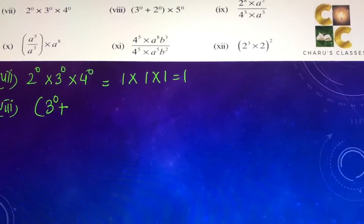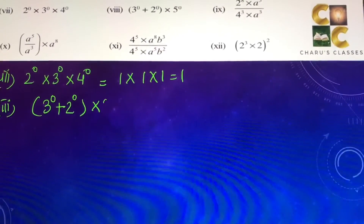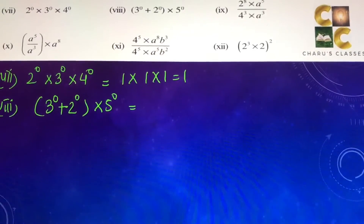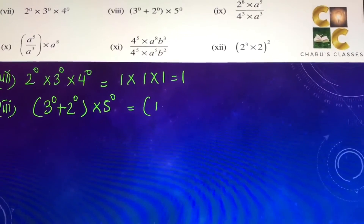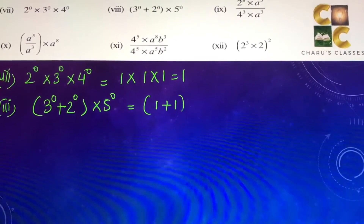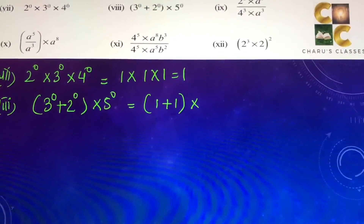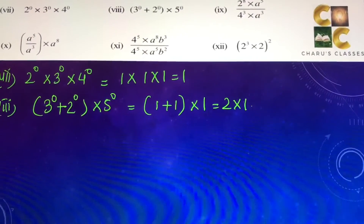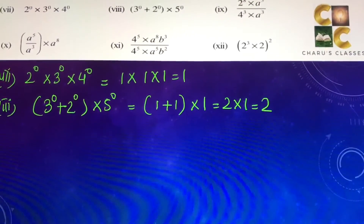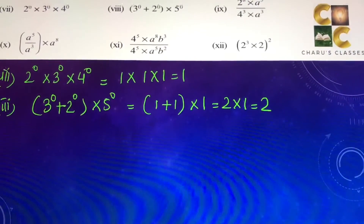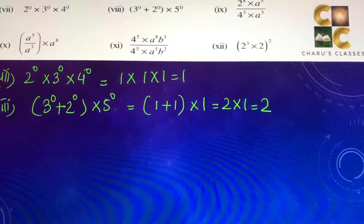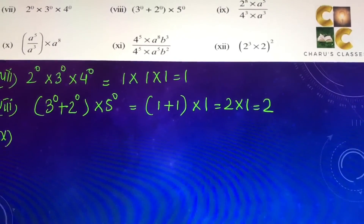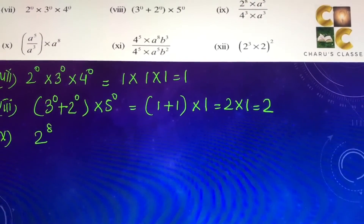Eighth part: 3 to the power 0 plus 2 to the power 0 into 5 to the power 0. This will be 1 plus 1 multiplied by 1, that is 1 plus 1, that is 2.